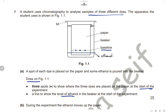Draw a line to show the level of ethanol in the beaker at the start. Here, ethanol is the solvent, so the level of the solvent will be below the baseline. We draw a line for ethanol — it will be above the lower part of the paper but below the baseline.